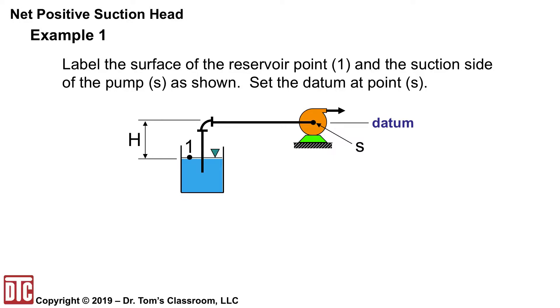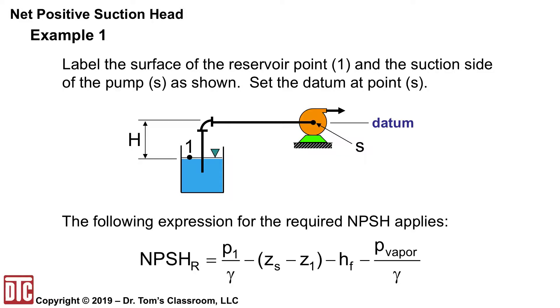Well, we'll label as we did the surface of the reservoir 1 and the suction side S. It's at the datum point at S actually because it's sort of the fixed part here. And so the required is going to be equal to the available because we're trying to find that special H.